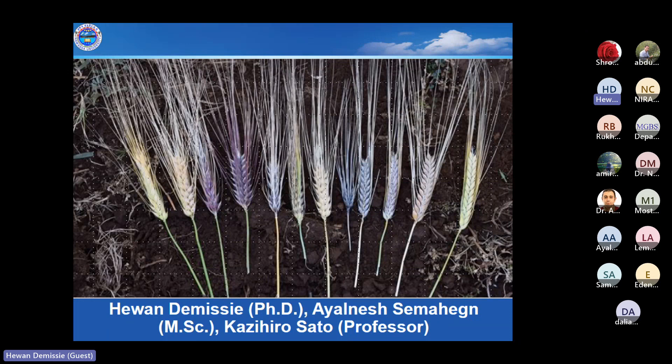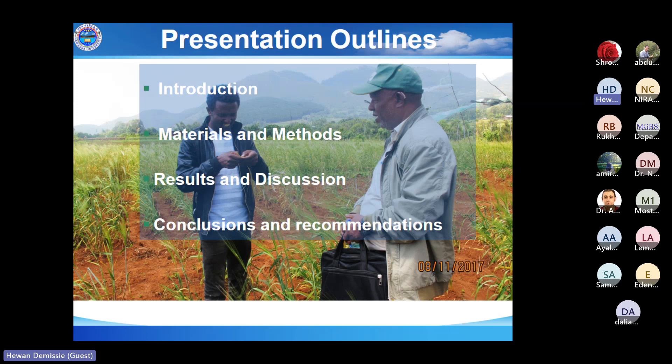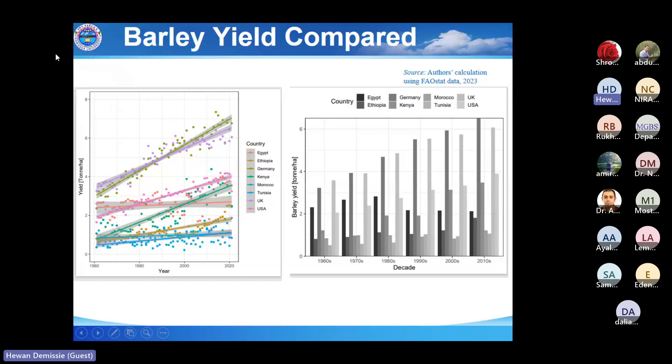This picture shows a different collection of barley that we have collected here in the southern part of Ethiopia. You can see there is huge diversity, but this diversity doesn't ensure continuity for the future because of acid stress. My presentation outline will cover introduction, materials and methods, results and discussion, and conclusion and recommendations.